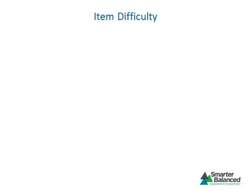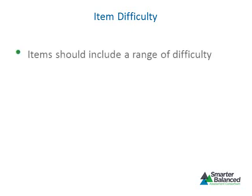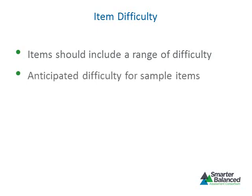A range of difficulty is necessary to discriminate between low and high performing students. Items and tasks should form a continuum from easy — those most students could be expected to answer — to hard — those only a few students could answer — with most items falling in the middle range of difficulty. An adaptive test requires items spanning a full range of difficulty. Item writers should include items perceived as easy, medium, and hard. Each sample item in the item specifications provides information about its anticipated difficulty level.